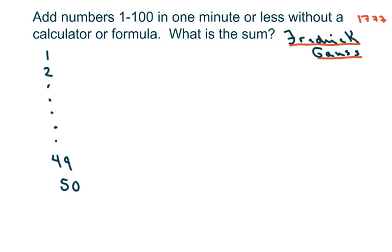Then he made a second column, and it would be 51, 52, all the way down to 99, 100.